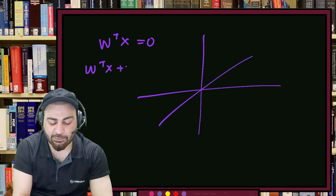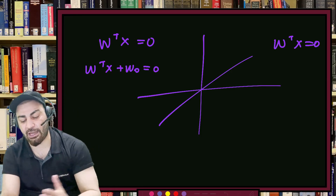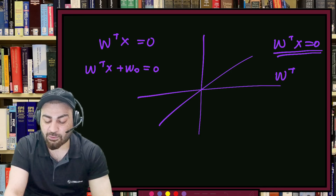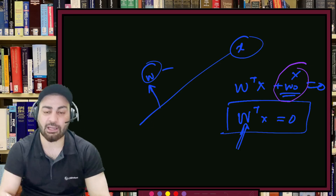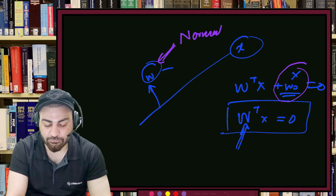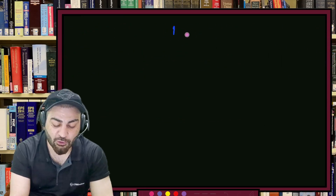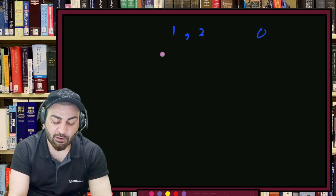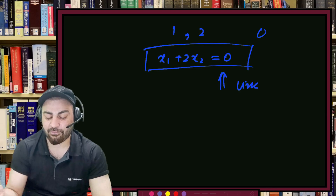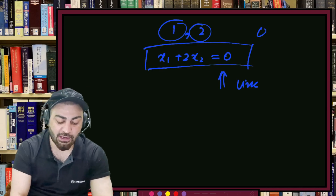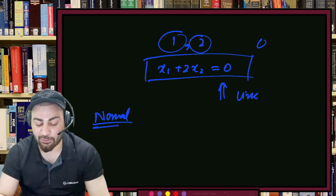If you give me the normal vector w, I can uniquely determine the line. For example, if w = [1, 2], the line equation is 1·x₁ + 2·x₂ = 0. So the equation of line in 2D is w^T x = 0, where w is the normal vector. This answers how to mathematically represent decision boundaries — just give me w, and I give you the line.